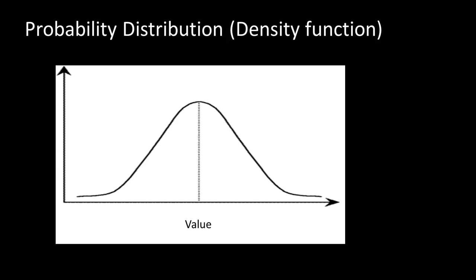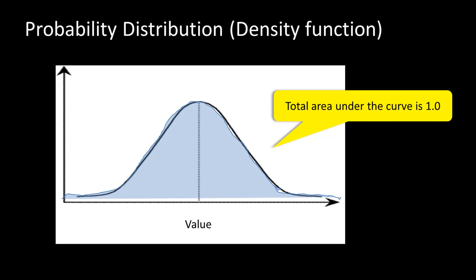We represent a continuous probability distribution by a probability density function, which is a continuous curve. For a discrete probability distribution, it might be a histogram. For a continuous probability density function, the area under the curve equals 1.0 — representing the complete space of what can happen. For example, with heights of people, the probability that a person will have some height is 1. The area to the left of a line v1 indicates the proportion of values less than v1. If v1 is 5 feet 10 inches, the area to the left shows the proportion of people 5 feet 10 inches or shorter. The area between two lines indicates the probability that a value falls between those two ranges.